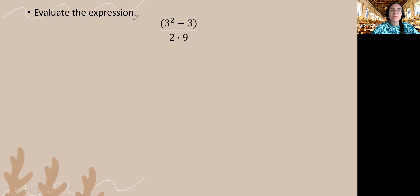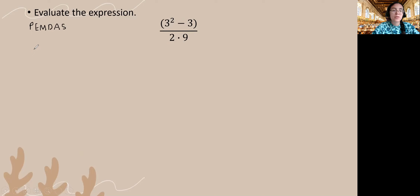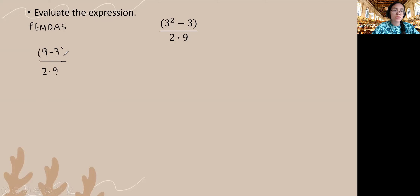I'm going to start in the numerator and write my order of operations off to the side. Within the numerator I have a parentheses, a power, and subtraction. In the denominator I have multiplication. So: 3 squared is just 3 times 3, which is 9. So it'll be 9 minus 3 in the numerator, divided by 2 times 9. I'm going to do the multiplication first: 2 times 9 is 18. So I have 9 minus 3 at the top, which gives me 6, divided by 18.